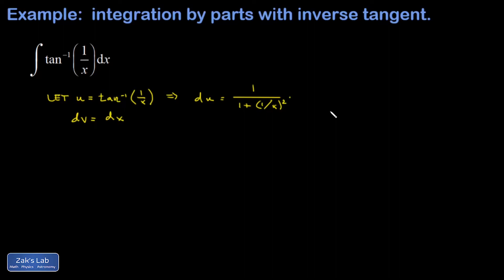1 over x is x to the negative 1, so when I differentiate I get negative x to the negative 2. I can clear out all of these fractions by multiplying the numerator and denominator by x squared. That leaves me with a negative 1 in the numerator and an x squared plus 1 in the denominator. Don't forget your dx.